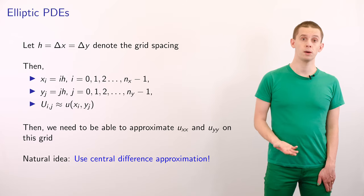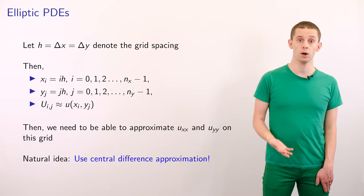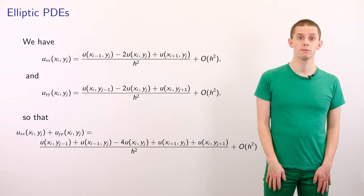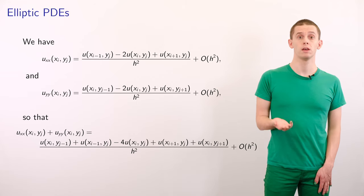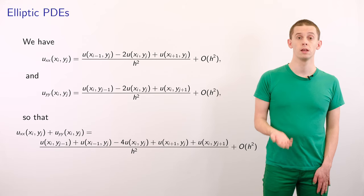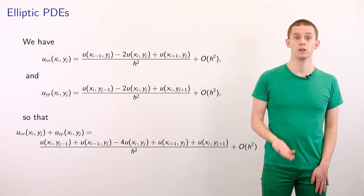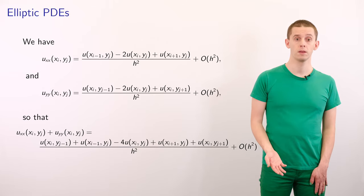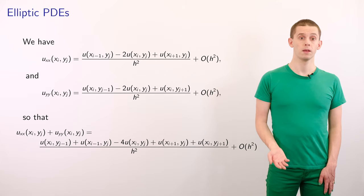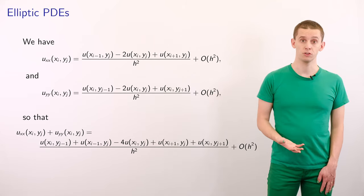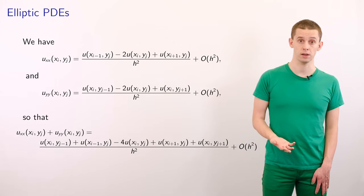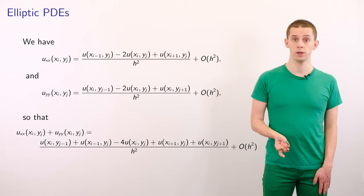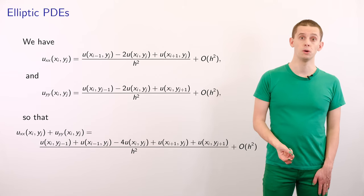So therefore we need to be able to approximate the derivatives uxx and uyy on our finite difference grid, and a natural idea is to make use of a central difference method. So at a grid point xi and yj we have that uxx is equal to u of xi minus 1 comma yj minus 2 u xi comma yj plus u xi plus 1 comma yj divided by h squared plus terms of order h squared. And we have a similar expression for uyy, and we can combine these two expressions into an expression for the Laplacian of u at xi and yj. And we'll actually note that the central term in these two expressions combines and we get a term minus 4 u of xi and yj.